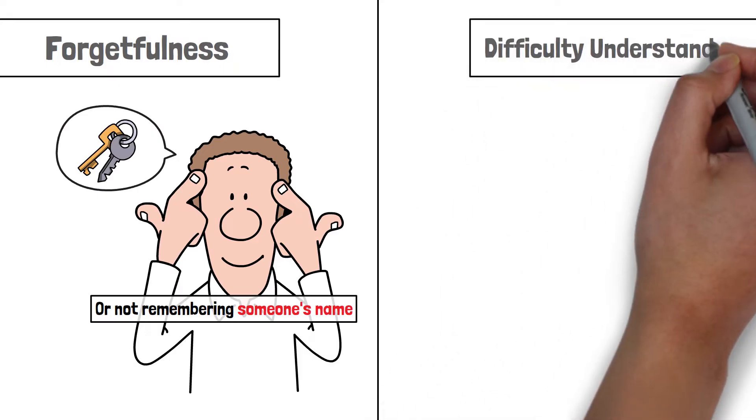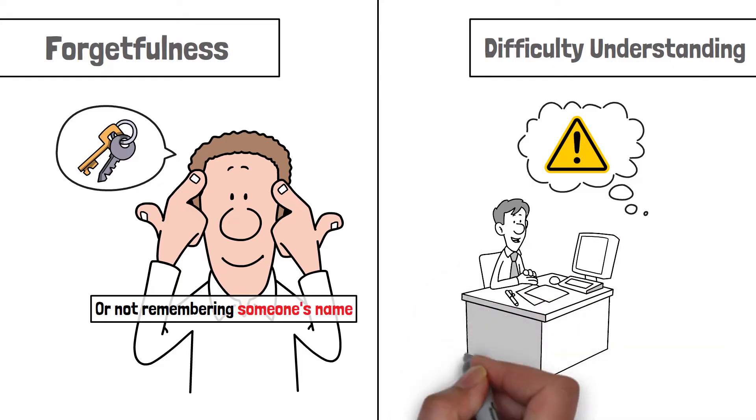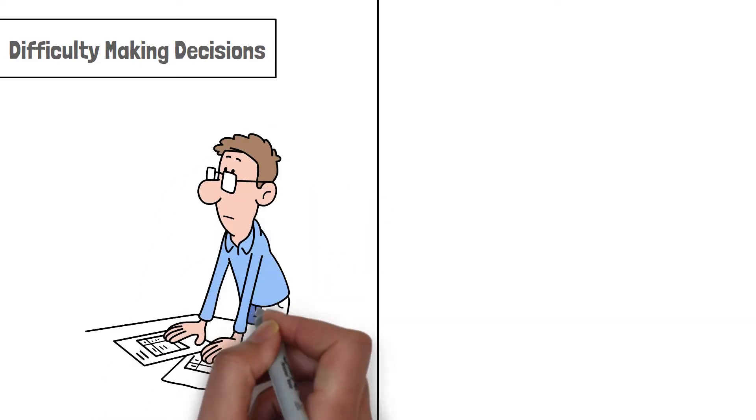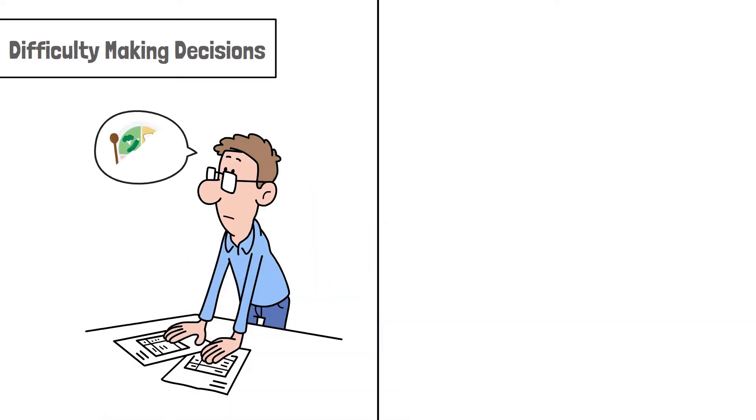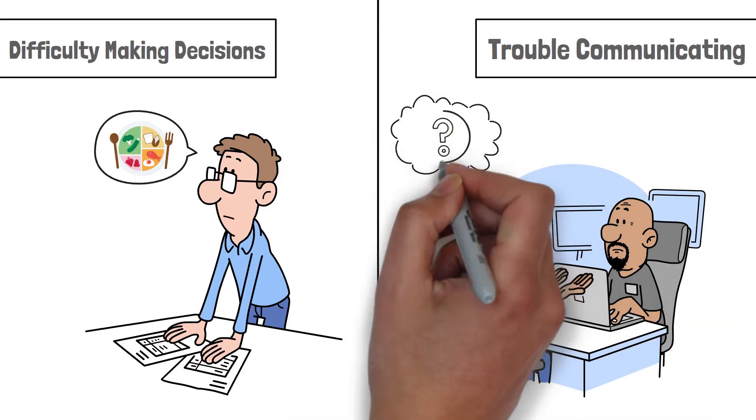Difficulty understanding. Difficulty in understanding simple things or following a story or instructions. Difficulty making decisions. Having trouble making everyday small decisions, such as what to wear or what to eat. Trouble communicating. Not being able to choose the right words or not being able to express thoughts clearly.